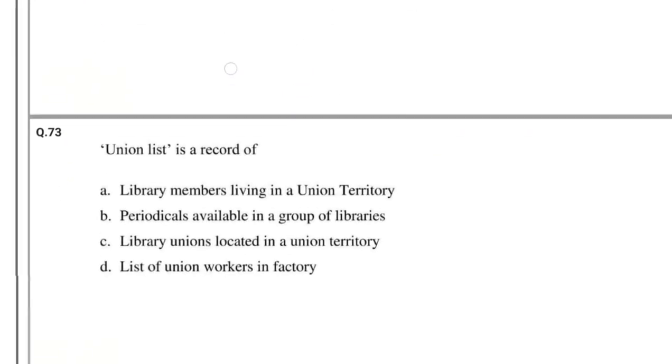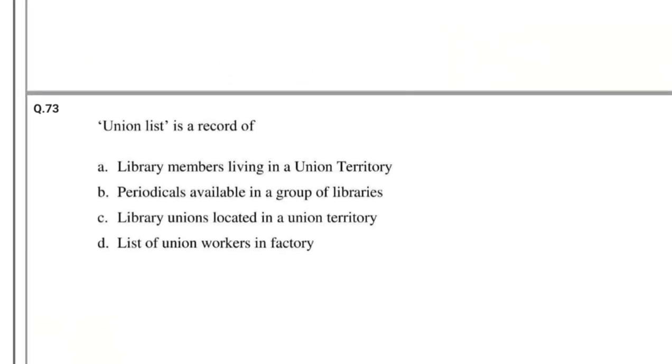Question number 73: A union list is a record of — the answer is Periodicals available in a group of libraries.